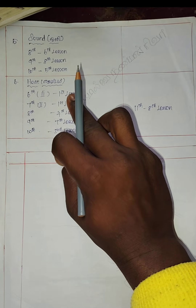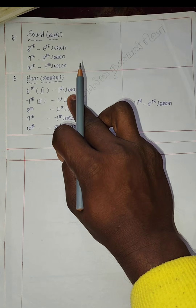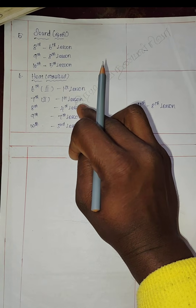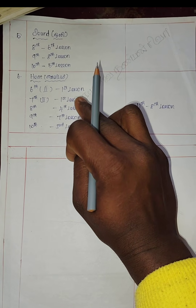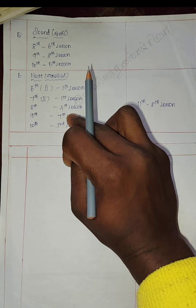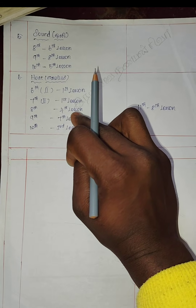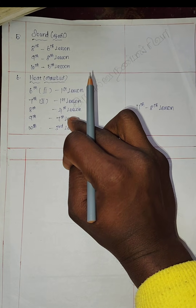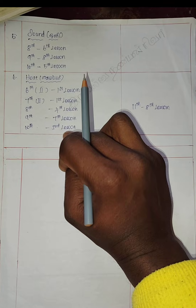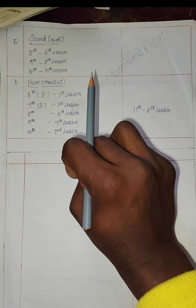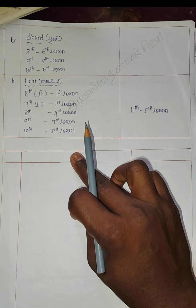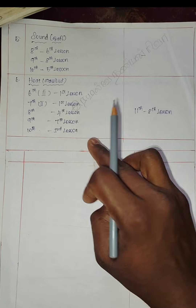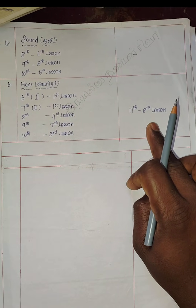The sixth topic is Heat. 8th — 6th lesson; 1st lesson; 7th lesson; 1st lesson; 8th lesson; 9th — 7th lesson; 10th lesson. We will learn more about time and level.